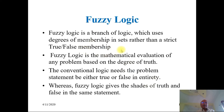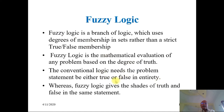Fuzzy logic is a branch of logic which uses degrees of membership in sets rather than a strict true or false membership. In crisp logic, an element may be true or false. But in the case of fuzzy logic, degrees of membership are defined. Fuzzy logic is the mathematical evaluation of any problem based on degrees of truth. Conventional logic needs the problem statement to be either true or false in entirety.